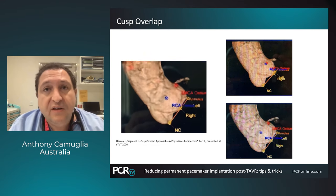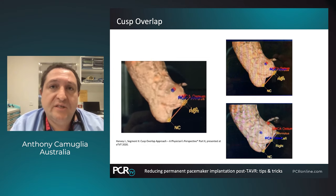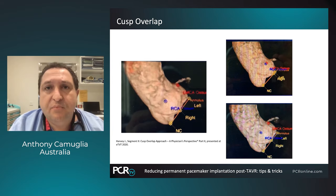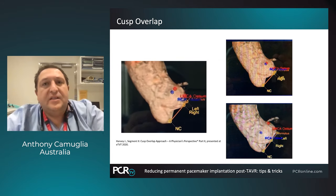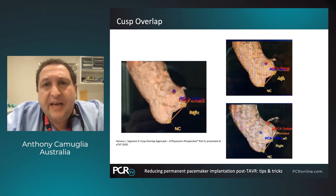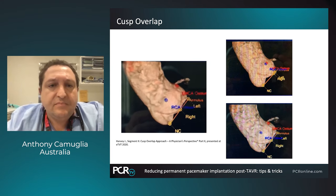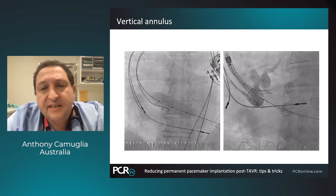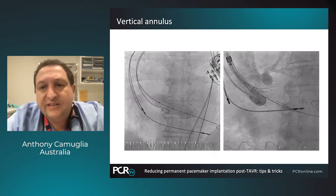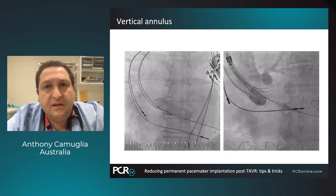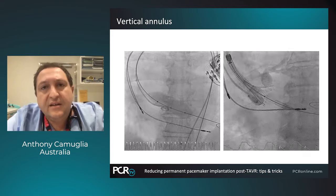The basics of the technique involve using CT — our bread and butter as TAVI operators — moving away from the traditional three-cusp view and overlapping the insertion points of the left and right coronary cusps on the right-hand side of screen. That translates into a fluoroscopic image, using the non-coronary cusp as the lowest part of the annulus as the anchor around which we deploy our TAVI prostheses. This can be used even in patients with vertical annulus or horizontal aorta, especially with the NAVITOR system, which has excellent deliverability and significant flexibility for tortuous anatomy.